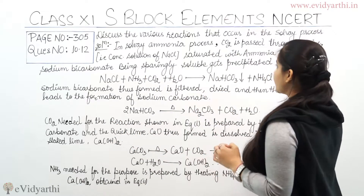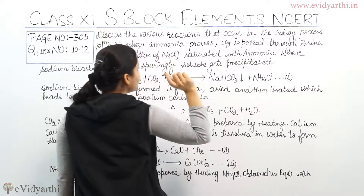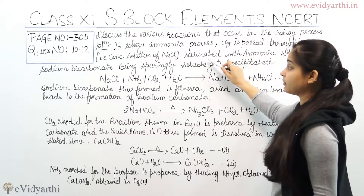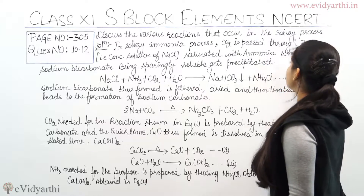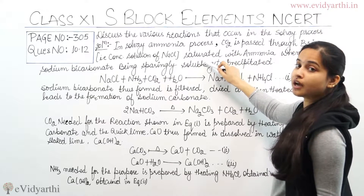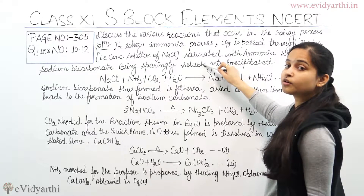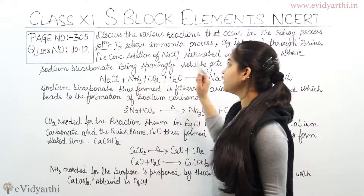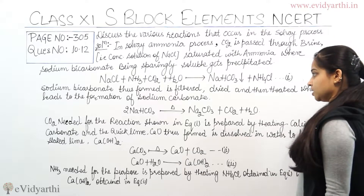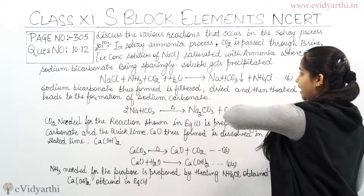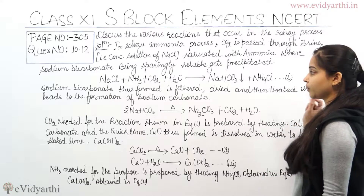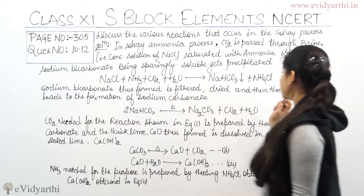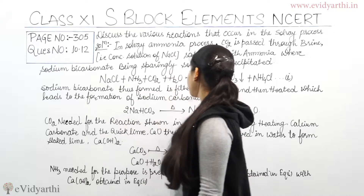In the Solvay ammonia process, CO2 is passed through brine, which means a concentrated solution of sodium chloride saturated with ammonia. Sodium bicarbonate, being sparingly soluble, gets precipitated. So sodium bicarbonate precipitate is formed as a product along with ammonium chloride. The sodium bicarbonate thus formed is filtered, dried, and then heated, which leads to the formation of sodium carbonate.